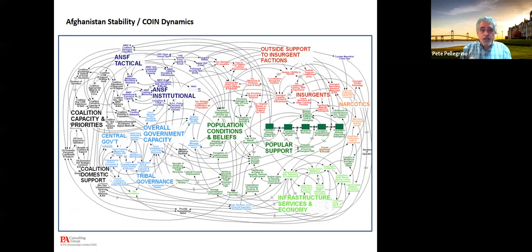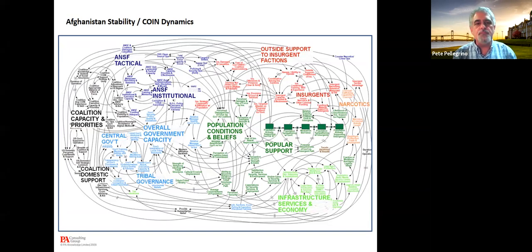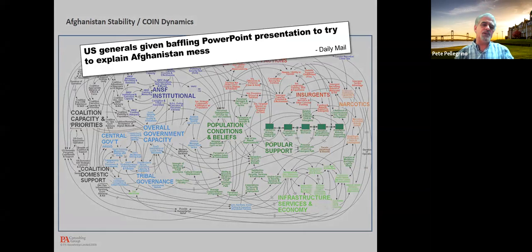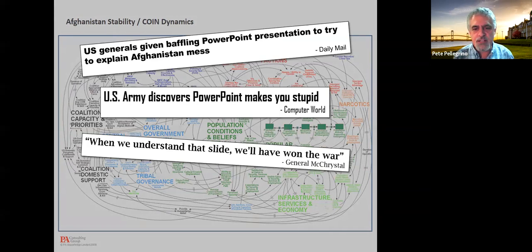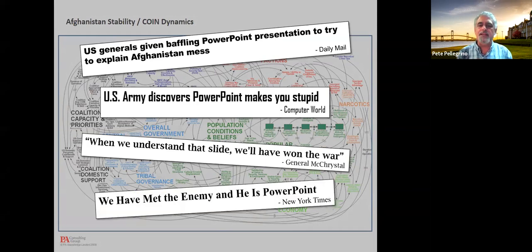Here's a classic example of where PowerPoint got blamed. In 2009, PA Consulting Group put together what's called a K-map — an influence map looking at the Afghanistan insurgency problem at the time. When it was presented, it ended up in the newspapers with headlines like 'U.S. generals giving baffling PowerPoint presentation' and 'Army discovers that PowerPoint makes you stupid.' McChrystal picked on this tongue-in-cheek. Everyone was picking at the slide. Nobody was saying 'PA Consulting Group, you made something we don't understand.' No — it's PowerPoint that's getting beaten up.